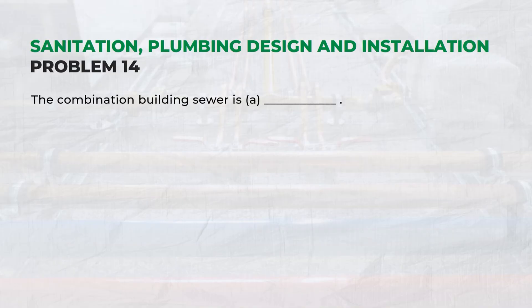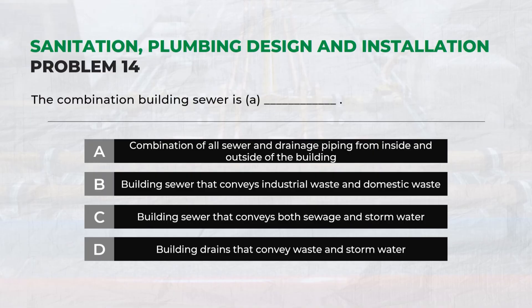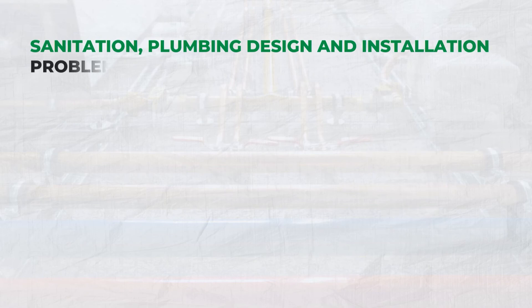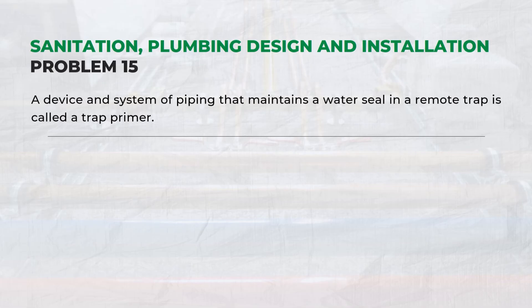The combination building sewer is A: sewage and stormwater. A device and system of piping that maintains a water seal in a remote trap is called a trap primer.